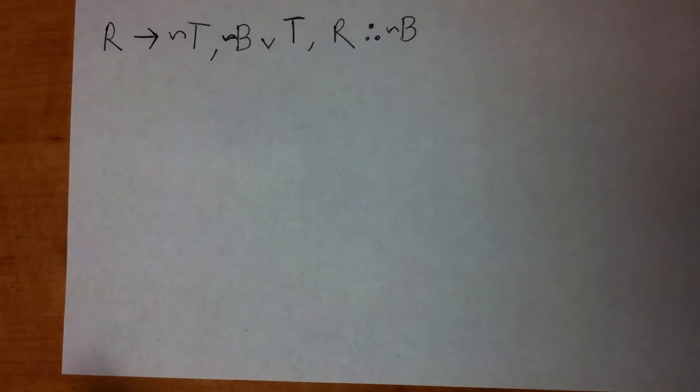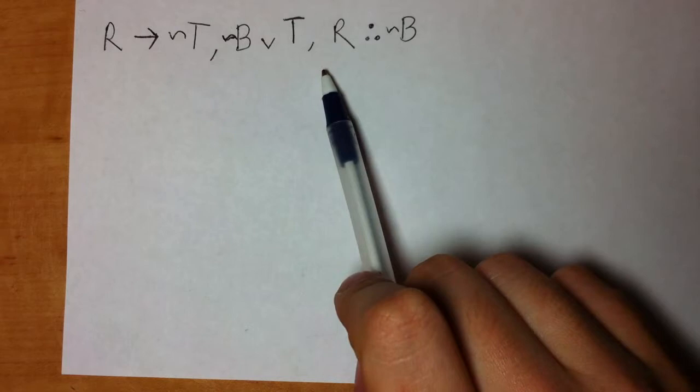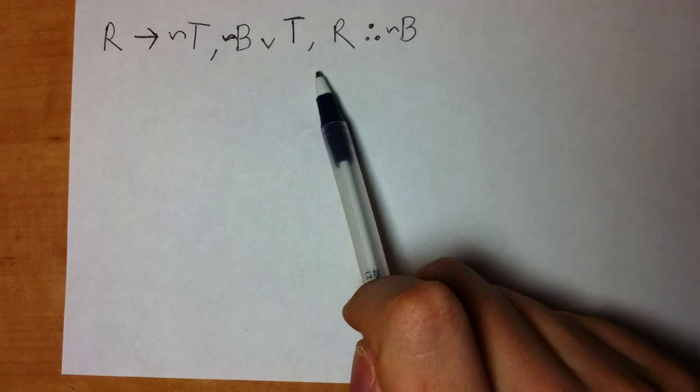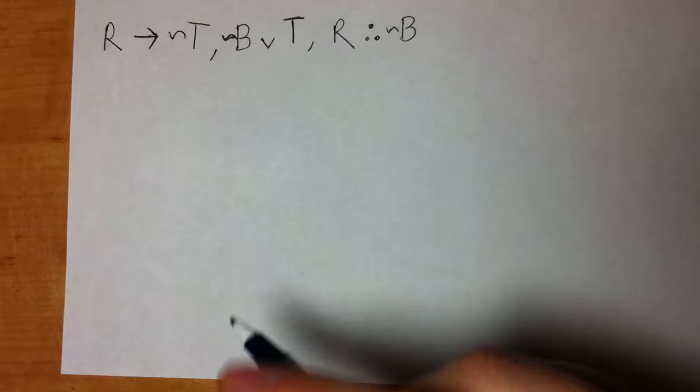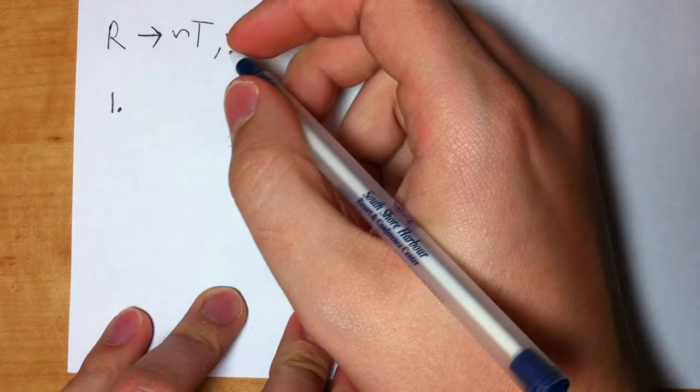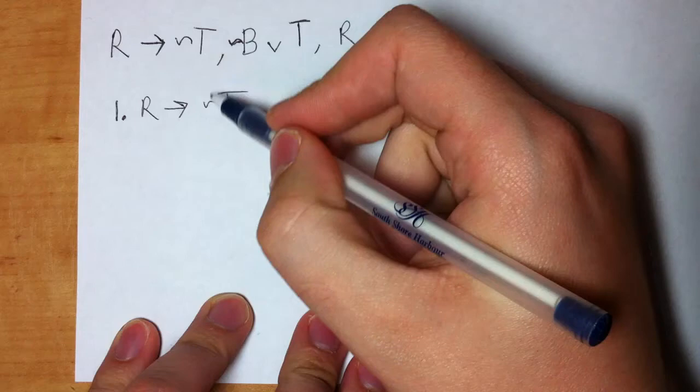So, using only the rules that we just reviewed, we're going to do a proof. The way we set up a proof is we're given, in this case, three premises. Sometimes it could be one, two, or four premises. But in this case, it's three premises and then the conclusion. The conclusion always comes after the three little funky dots. So the way we set it up is we put on line number one, R arrow tilde T. That's our first premise.